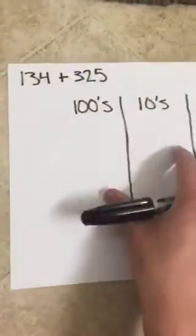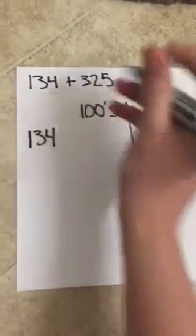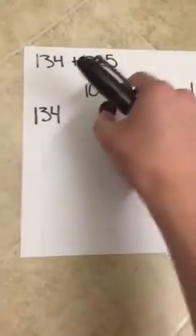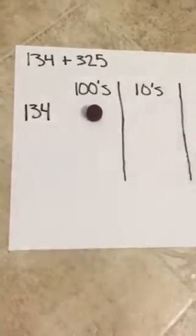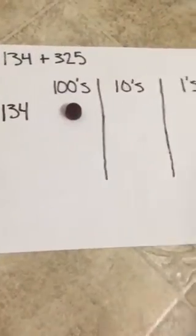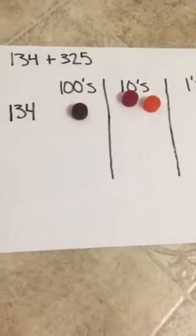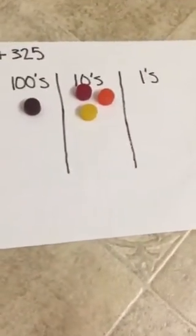Okay so first you want to look at 134. And then you look in the 100s place, they have a 1. So we place one gummy in the 100s place. In the 10s place we see a 3. So we put 3 in the 10s place. And then the 1s place we see a 4. So we put 4.